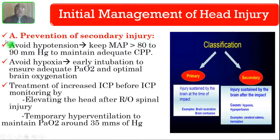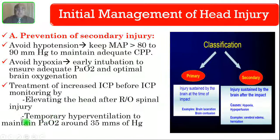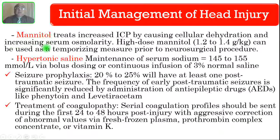To prevent secondary injury, avoid hypotension — keep the mean arterial pressure more than 80 to 90 mmHg to maintain adequate cerebral perfusion pressure. Avoid hypoxia by performing early intubation to ensure adequate PaO2 and optimal brain oxygenation. Treatment of increased ICP — before ICP monitoring — includes elevation of the head after ruling out spinal injury. Temporary hyperventilation to maintain PaCO2 around 35 mmHg. Give Mannitol to treat increased ICP; high-dose Mannitol at 1.2 to 1.4 g/kg can be used as a temporizing measure prior to neurosurgical intervention.